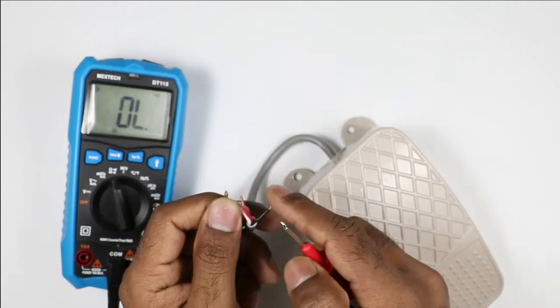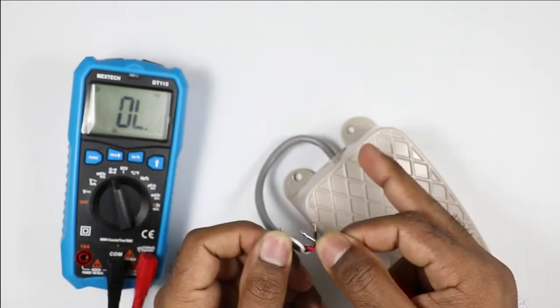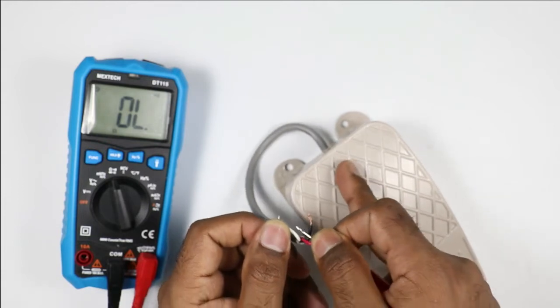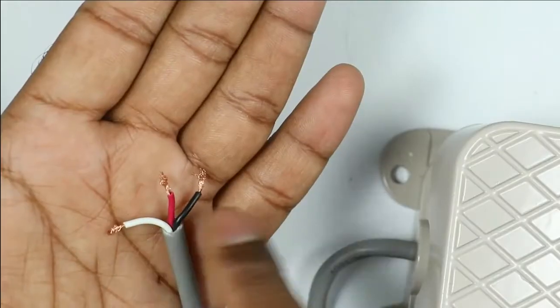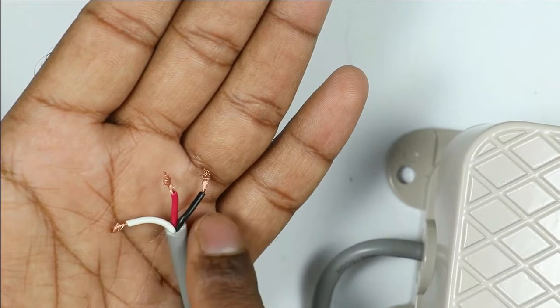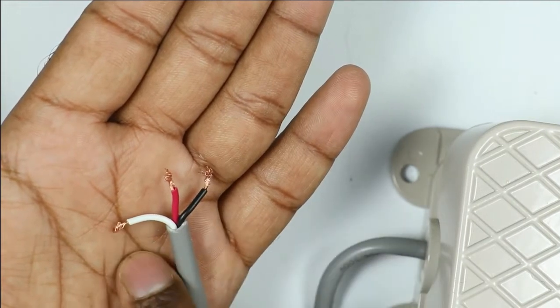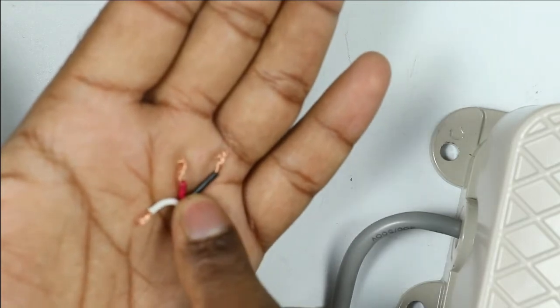Now I will check continuity of red wire with white wire. I am connecting both probes with these wires and when I press this foot switch, you can see there is continuity. On releasing this, there is no continuity. Among these three wires, white wire is common because both wires have continuity when checked with the white wire. So white wire is common, red wire is NO, and black wire is NC.